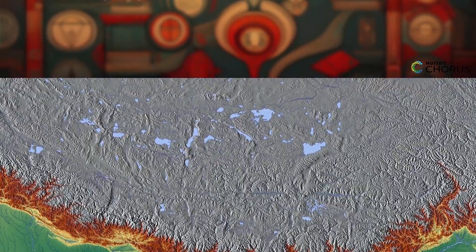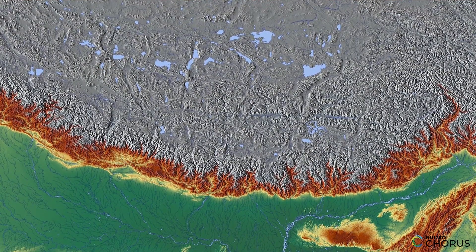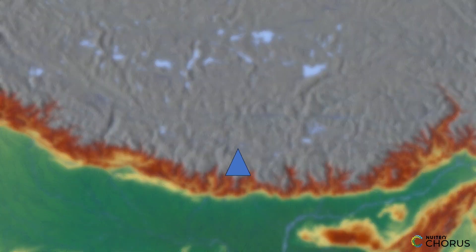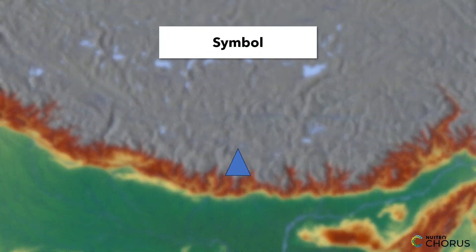Let's start with an easy example: understanding the symbols in a simple map. Look for a symbol like a blue triangle. In most maps, this represents a mountain. Knowing this symbol helps you quickly identify where mountains are located on the map. Symbols like these are used to convey information efficiently, so you don't have to read lengthy descriptions.